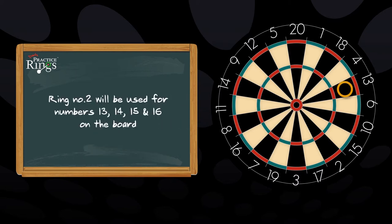Ring number two will be used for numbers thirteen, fourteen, fifteen, and sixteen on the board.